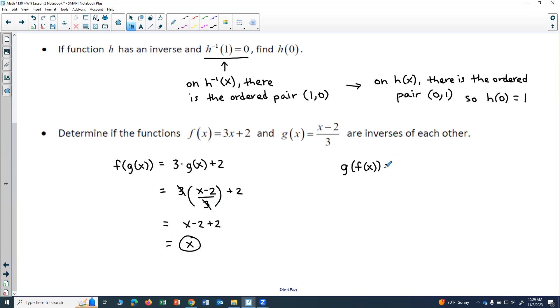Now I want to do the same thing with g of f of x. So g is (x minus 2) over 3. Instead of the x, I'm going to write f of x. So I'll have (f of x minus 2) divided by 3. f of x is the function 3x plus 2.